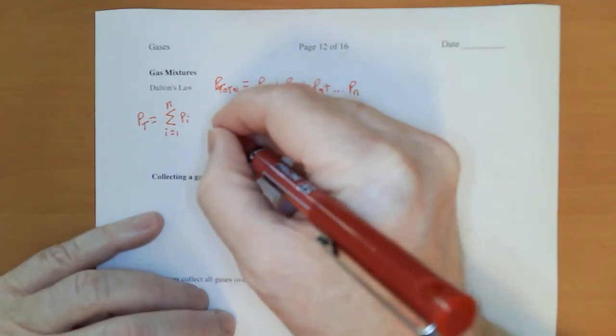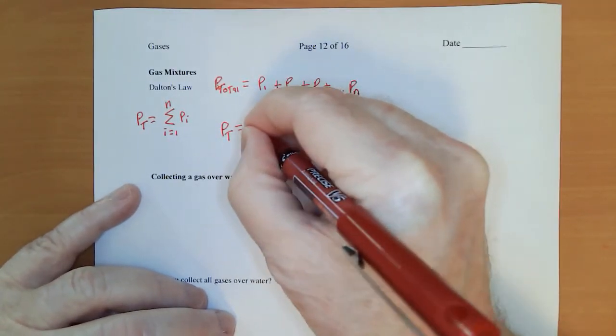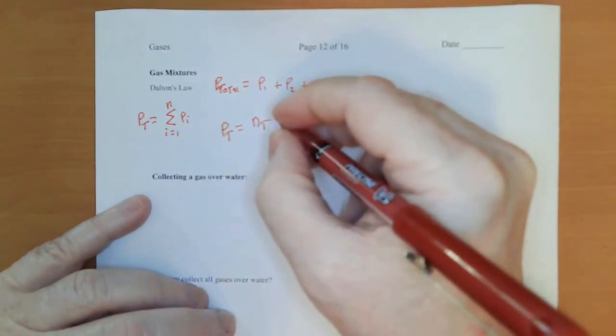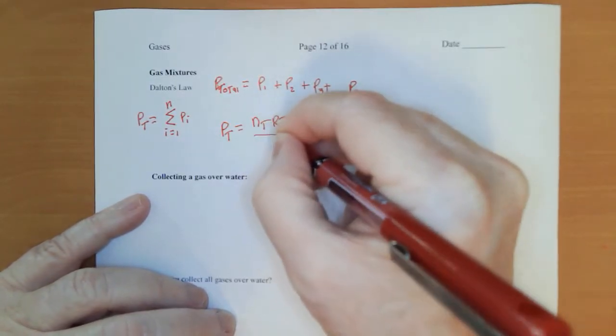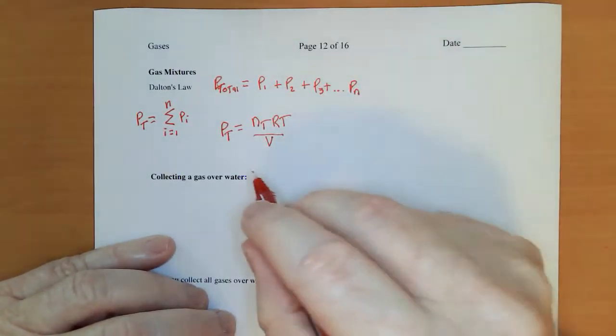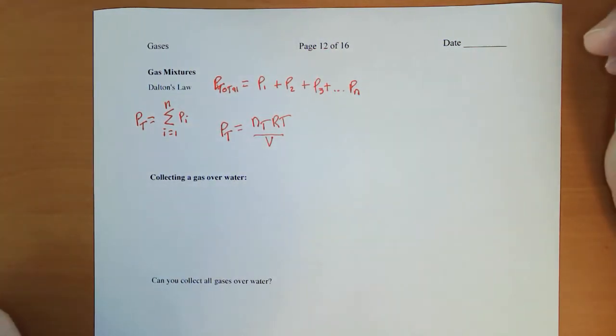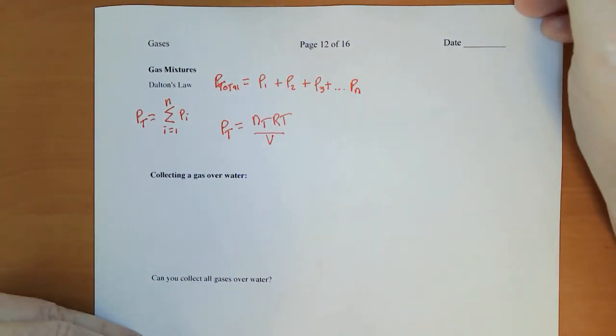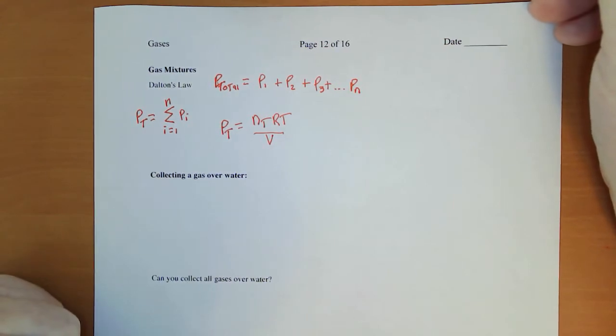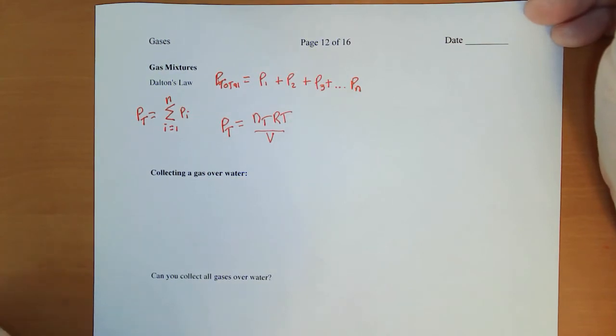What we can actually say is that total pressure equals the total number of moles times RT over V. This is an implication that it actually doesn't matter what the gas molecules are, it just matters how many of them there are in exerting pressure. And that's important to know.